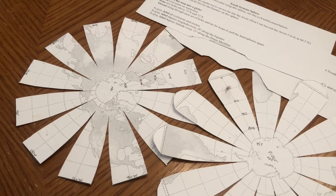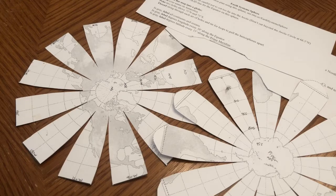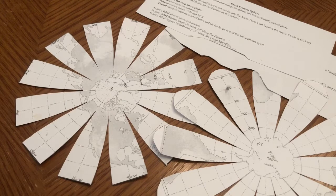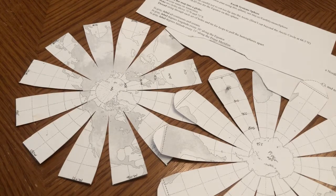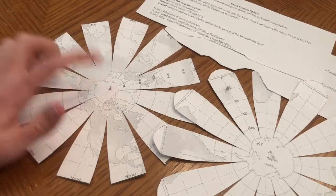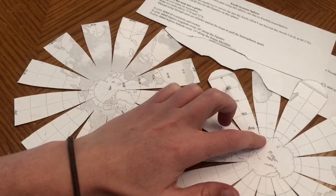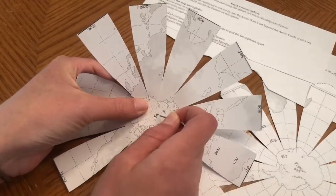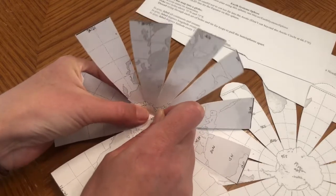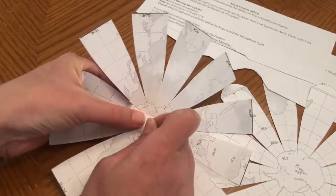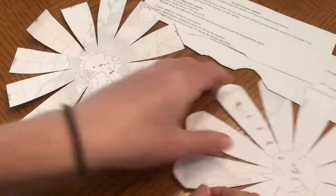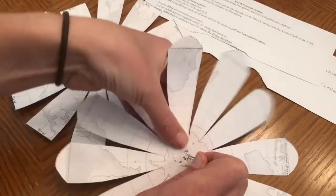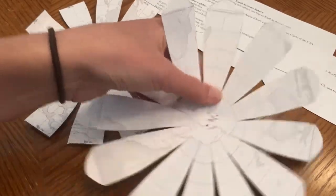The first thing we're going to need to do is grab something that is sharp, so either a paperclip, a nail, a needle, maybe even a toothpick, anything you have that can poke two holes in the northern hemisphere and two holes in the southern hemisphere. We want to make sure that the two holes are not right on top of each other because we're going to thread a piece of string through. Poke, poke, poke, and poke. We're all set.